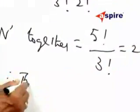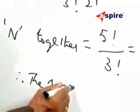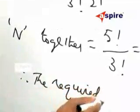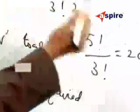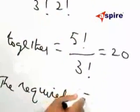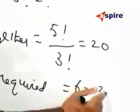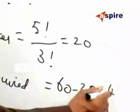Therefore the required number of words in which two n's do not come together will be equal to 60 minus 20, that is 40.